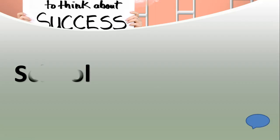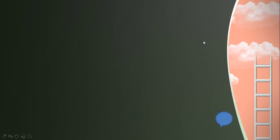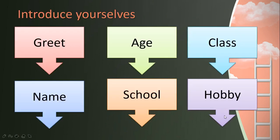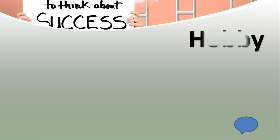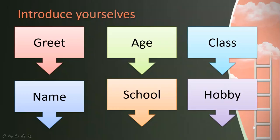Which school are you studying? You are studying in SJKT Bharati, so you say 'I am studying in SJKT Bharati'. And then your class — all of you are studying in Class 1 Vanavir, so 'I am in Class 1 Vanavir'. And then tell out your hobby — what you like to do. Maybe you can say 'I like to read books' or 'I like to play ball'. You may use all these things to introduce yourself.